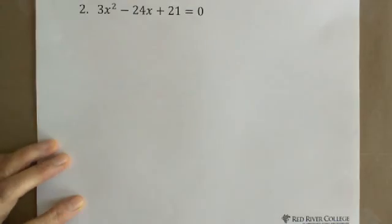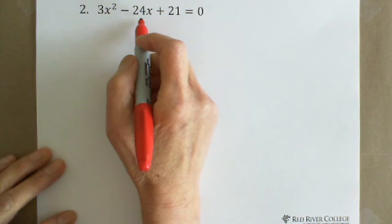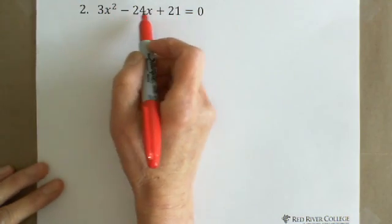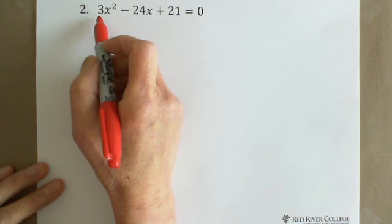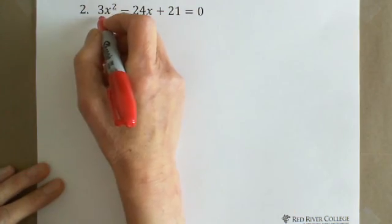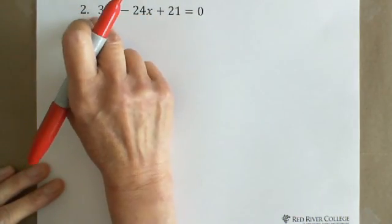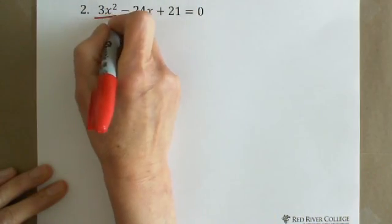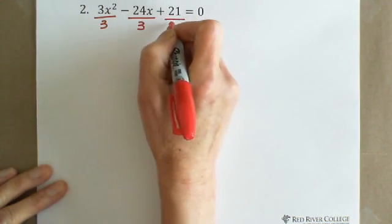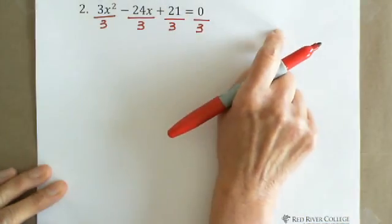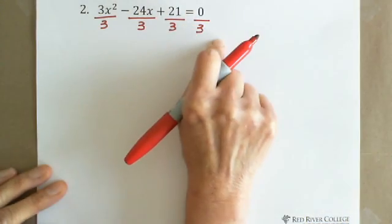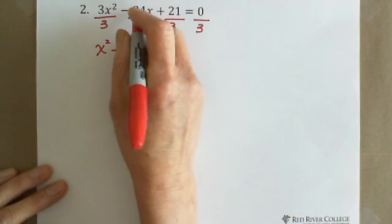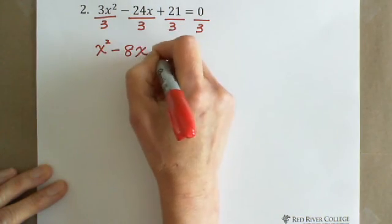The second example is 3x squared minus 24x plus 21 equals 0. Obviously 3, 24, and 21 all have a common factor of 3. We can divide both sides of the equation by 3 — since the equation equals 0, you can divide any number on both sides except 0. Dividing everything by 3 gives x squared minus 8x plus 7 equals 0.